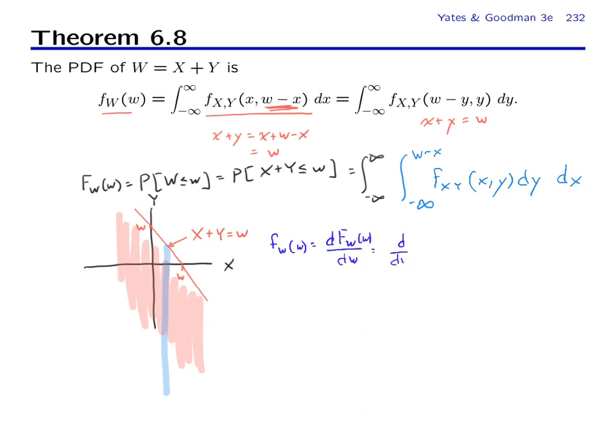This is d/dw of this double integral. And here we have a place where this is either very tricky or very easy. If you're really good at multivariable calculus and you remember your theorems of calculus, you'll know that you can bring this d/dw inside this integral, and that's because this thing integrates to one over all x and y.